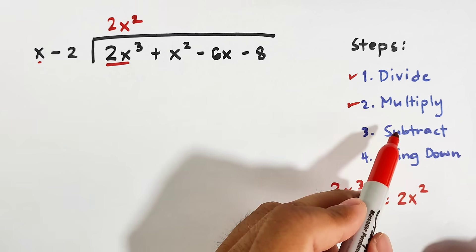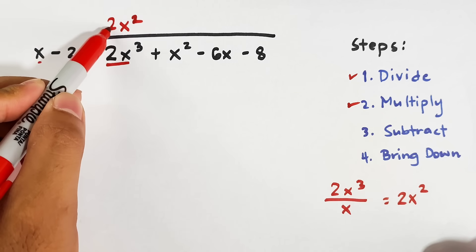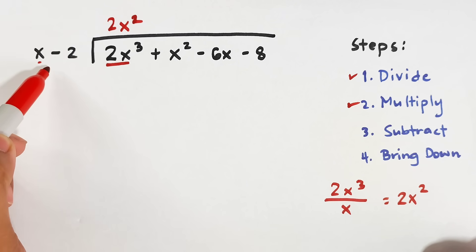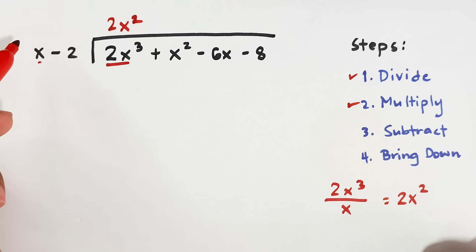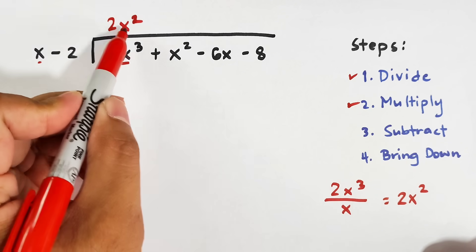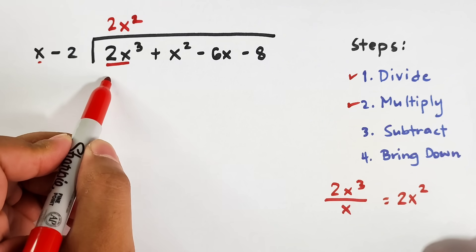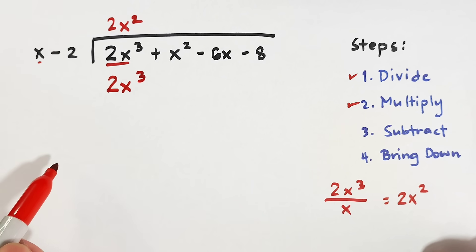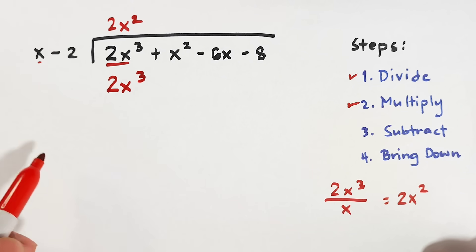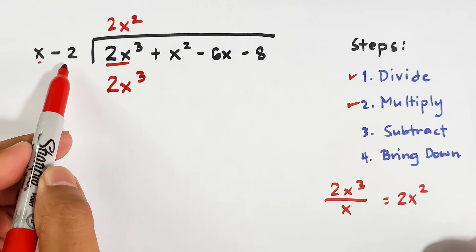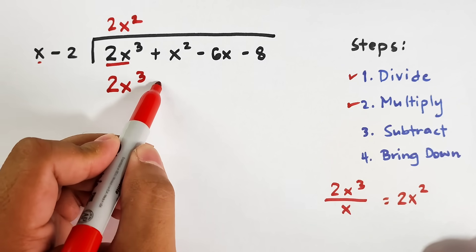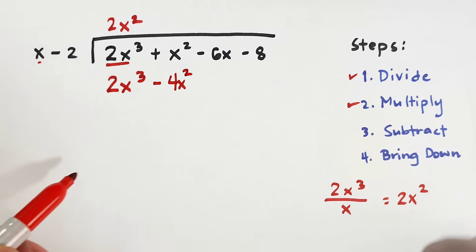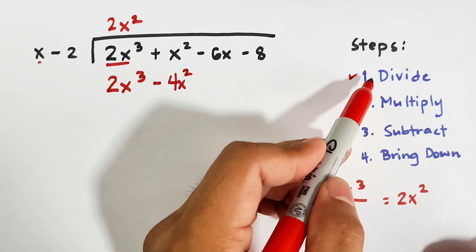We copy the coefficient, which is 2, so 2x cubed divided by x is 2x squared. Next, multiply. For the multiplication part, you multiply 2x squared by the entire divisor: 2x squared times x is 2x cubed, and 2x squared times negative 2 is negative 4x squared.